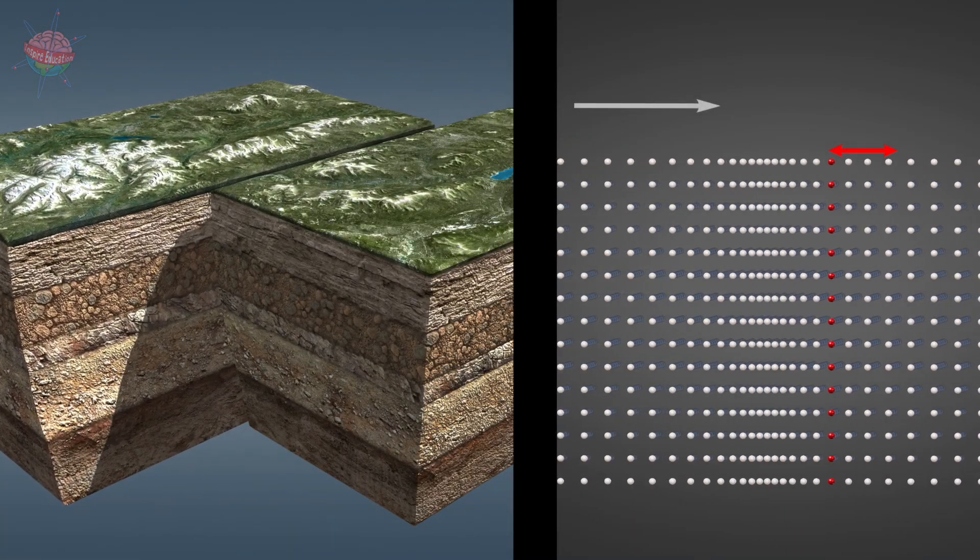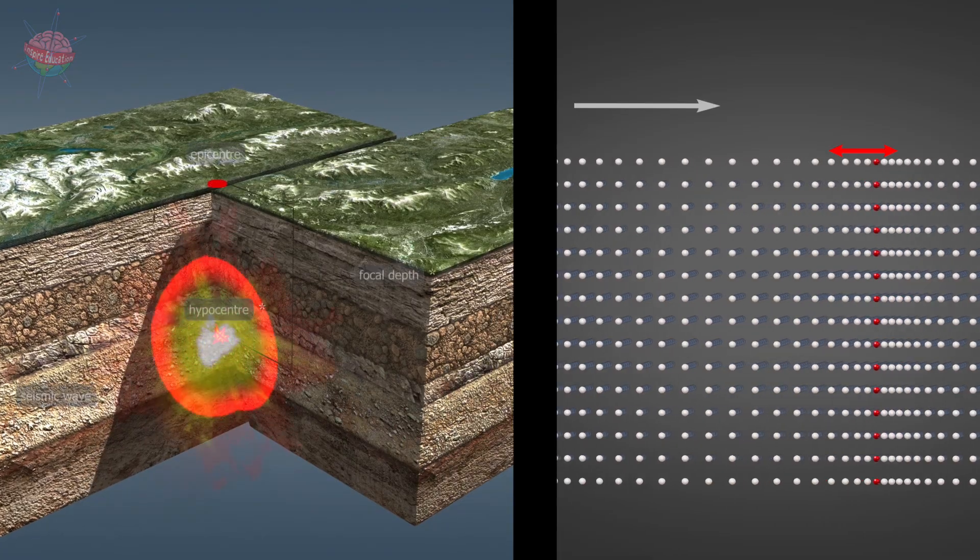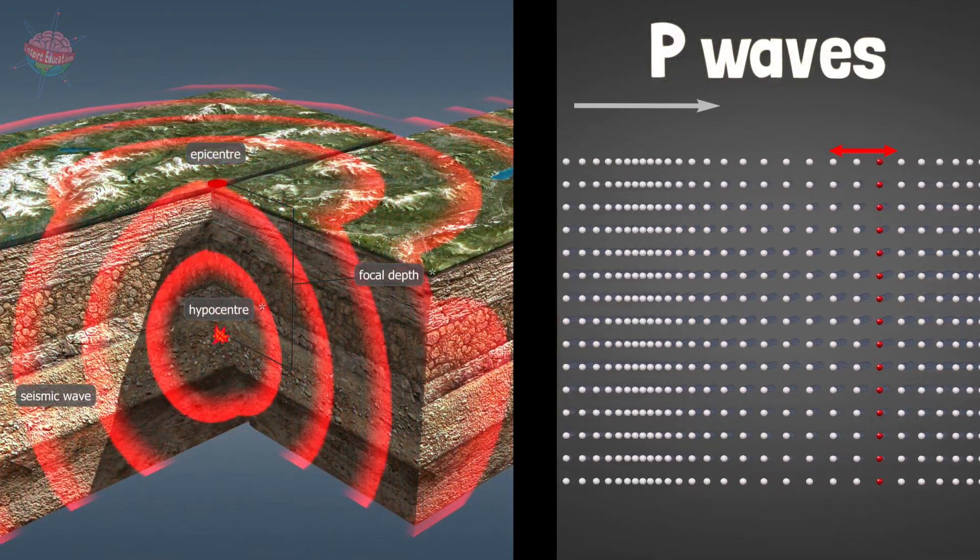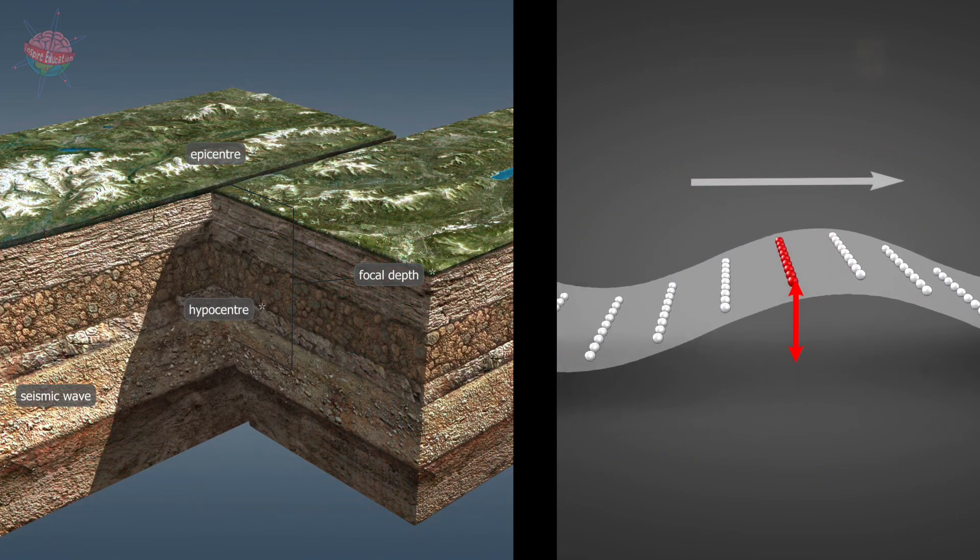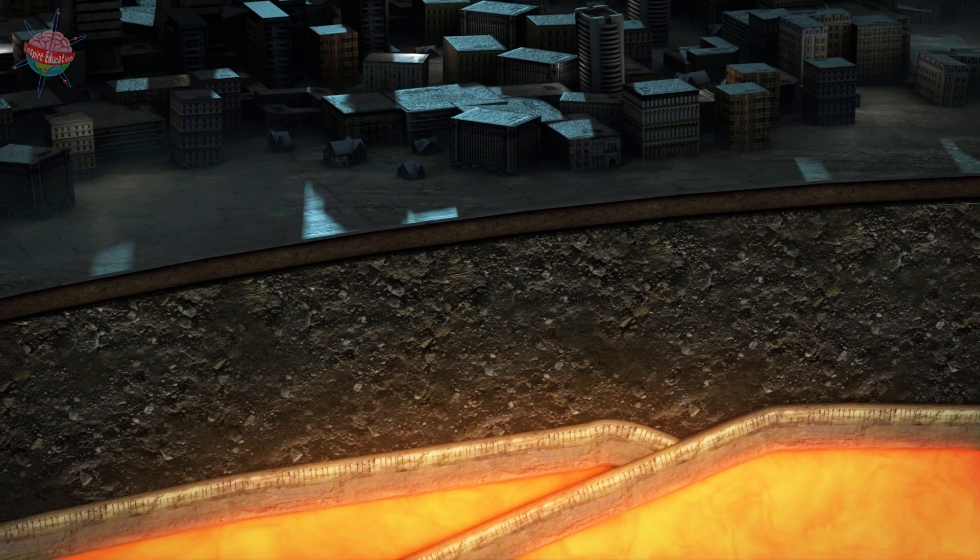The speed of longitudinal waves is higher, so they are the first waves to be detected by instruments. That is why they are called p-waves, that is, primary waves, while transverse waves are called s-waves, that is, secondary waves.